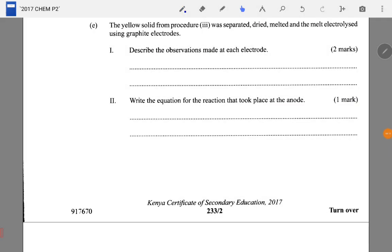Part E: The yellow solid lead oxide from procedure three was separated, dried, melted, and the melt electrolyzed using graphite electrodes. Let us recall this was lead oxide. Describe the observations made at the electrodes. At the anode, which is positive, we'll have the oxide ions migrating there, and they will be preferentially discharged, forming oxygen gas plus four electrons.